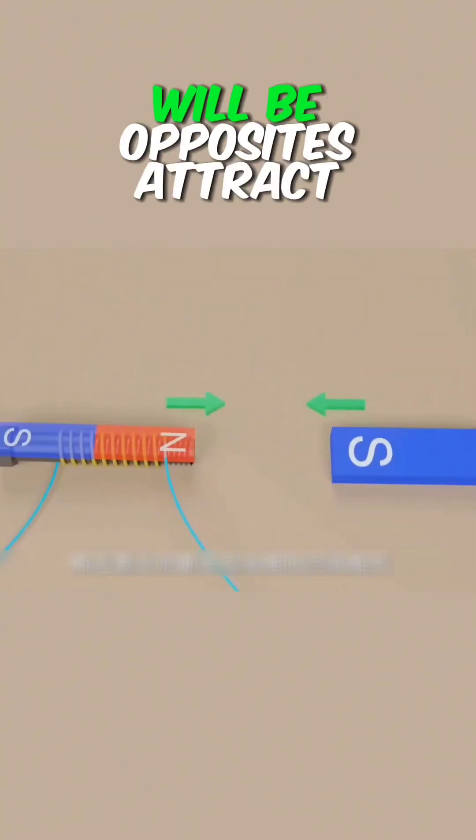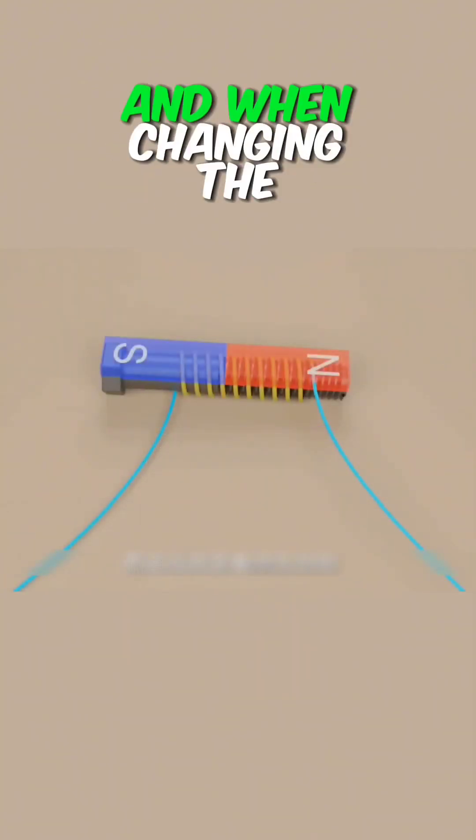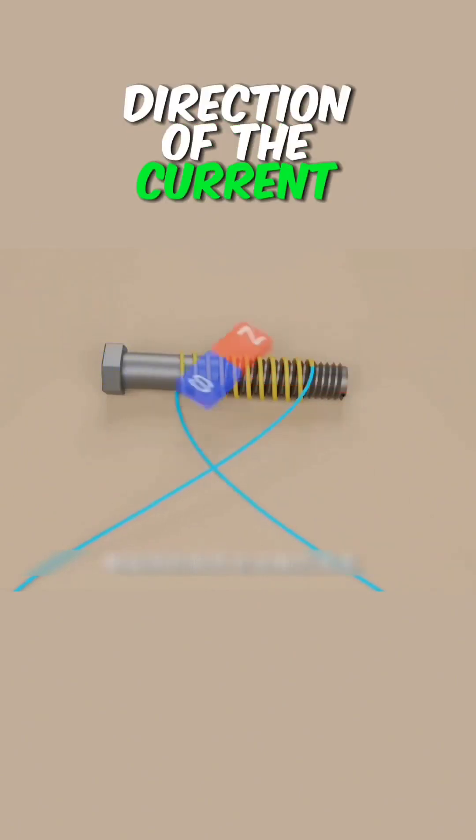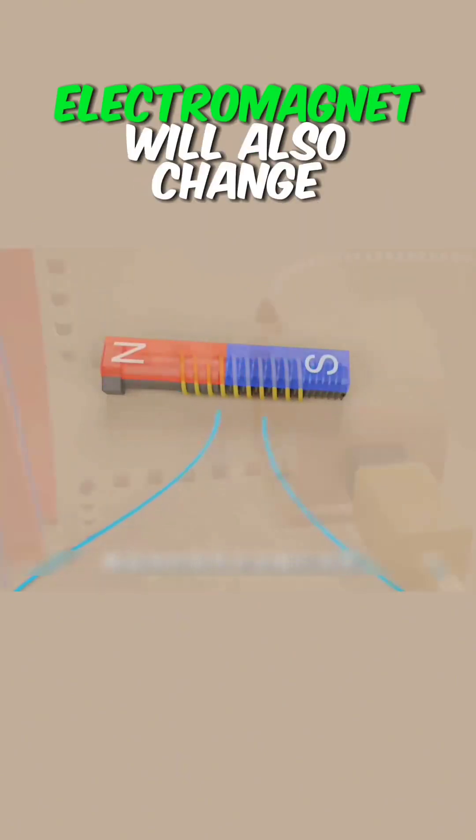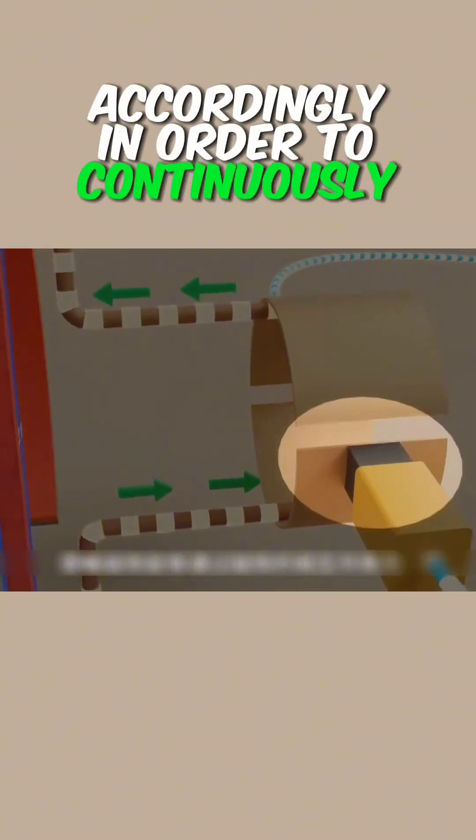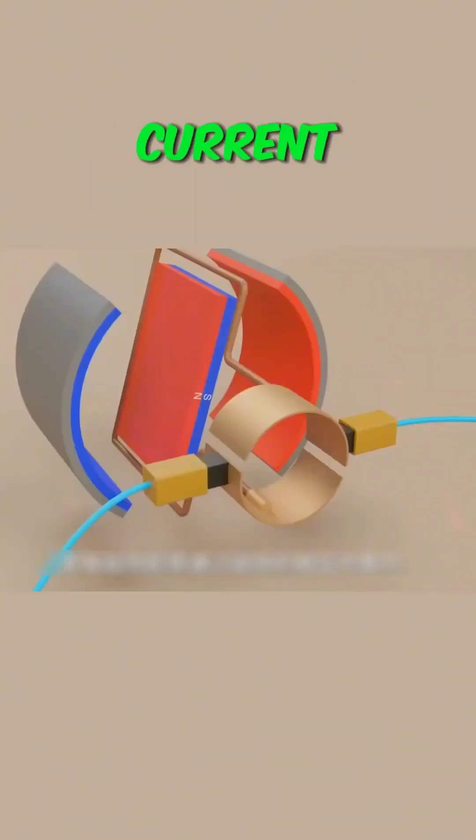Close to each other, opposites attract and the same poles repel. When changing the direction of the current, the polarity of the electromagnet will also change accordingly.